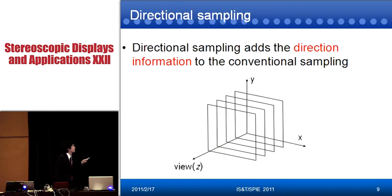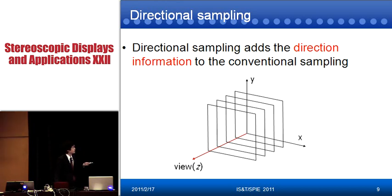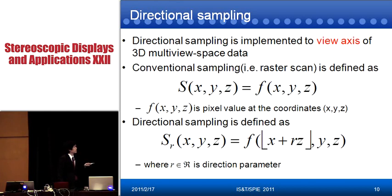Next, I explain directional sampling. Directional sampling adds directional information to conventional sampling. At this red line, you can change the sampling direction. To realize this method, we find the mathematical equation. Directional sampling is implemented only on the view axis of the 3D multiple space data.